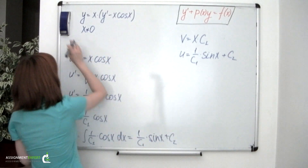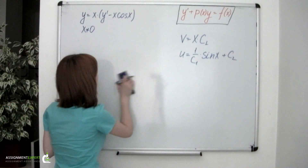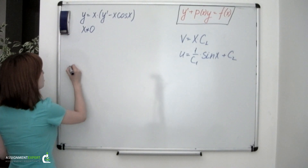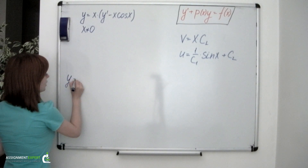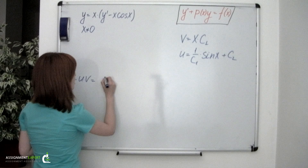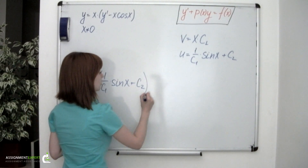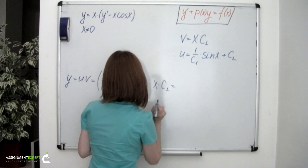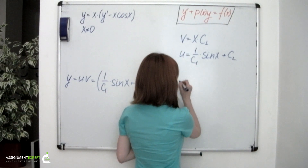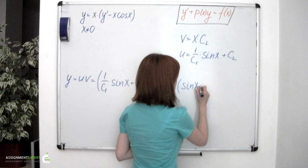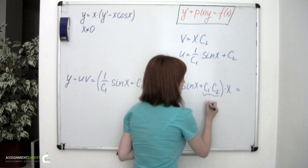The only thing left is to multiply the u and v functions in order to return to the y function. y equals u times v equals (1 over C₁ times sine of x plus C₂) times x times C₁. Multiplying through, this gives sin x plus C₁ times C₂ times x. We can denote this combined constant as C.